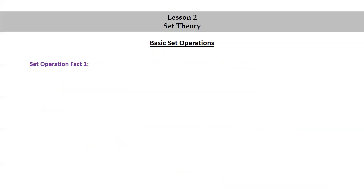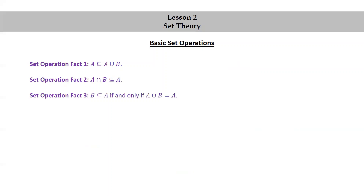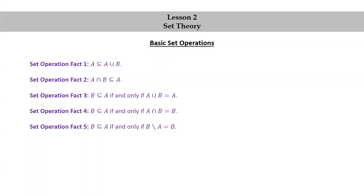Let's look at some facts about set operations. Fact 1: A is a subset of A union B. Fact 2: the intersection of A and B is a subset of A. Fact 3: B is a subset of A if and only if the union of A and B is equal to A. Fact 4: B is a subset of A if and only if the intersection of A and B is equal to B. Fact 5: B is a subset of A if and only if B minus A is the empty set.